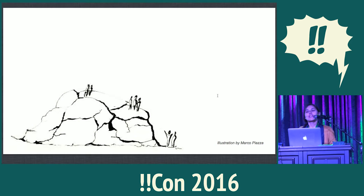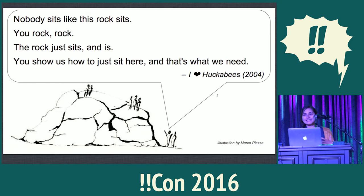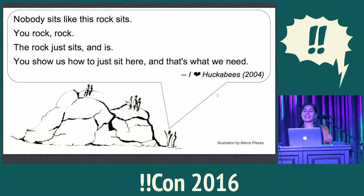In order to figure out why immutability is cool, let's talk about rocks, because rocks rock. This is a drawing of a boulder in Central Park and some people hanging out on it. I'd like to take this moment to read y'all a poem about rocks: "Nobody sits like this rock sits. You rock, rock. The rock just sits and is. You show us how to just sit here, and that's what we need." It's a poem from the movie I Heart Huckabees, 2004. The point is that immutability is like rocks — when we have some immutable data, it just sits and is forever, and that rocks because it allows us to avoid a lot of headaches that mutable data can bring about.